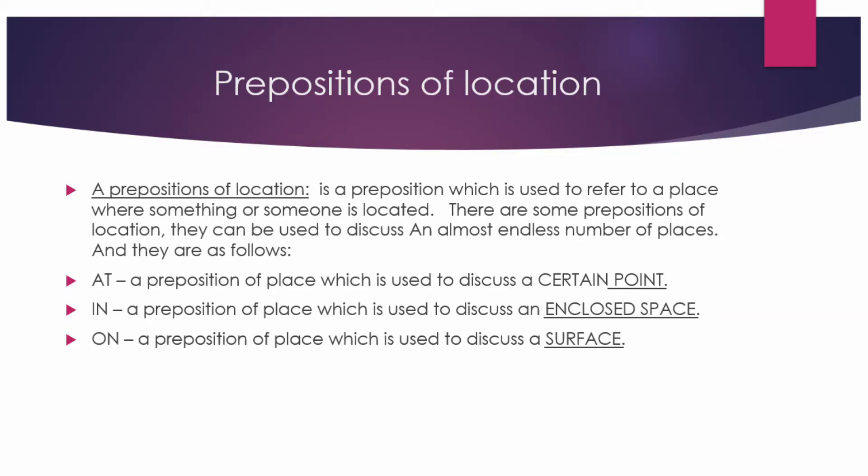In this example of preposition and the content of preposition, I told you we have preposition of location, preposition of timing, and preposition of direction. We'll start with preposition of location. Preposition of location can be defined as a preposition which is used to refer to a place where something or someone is located.